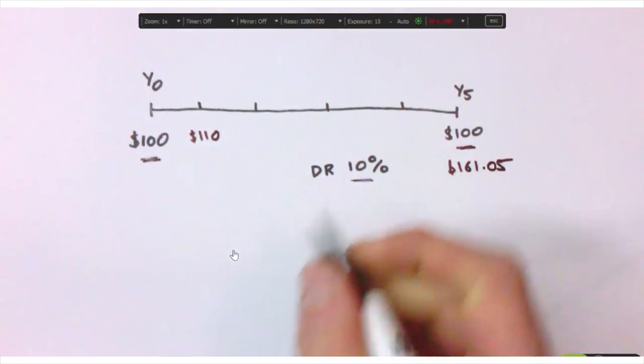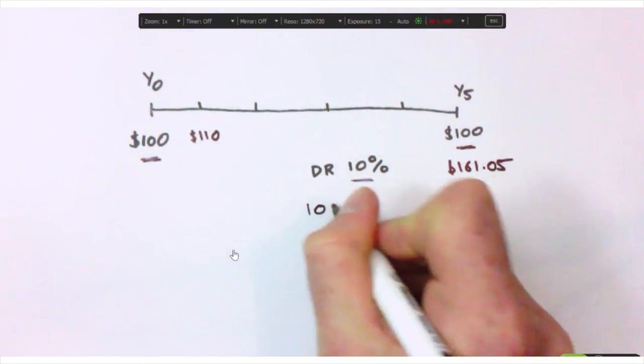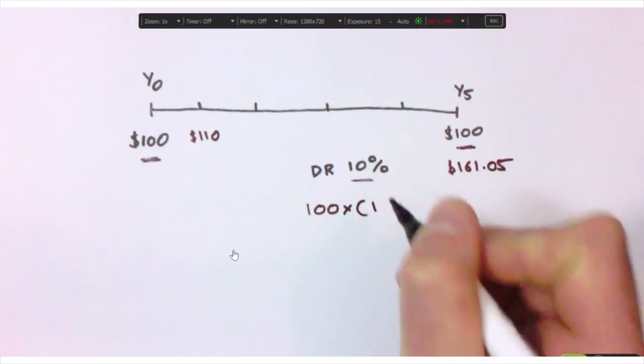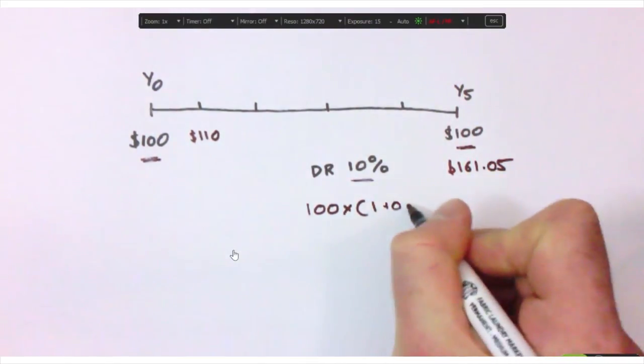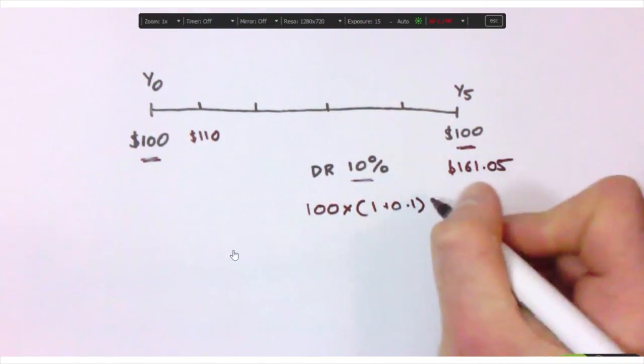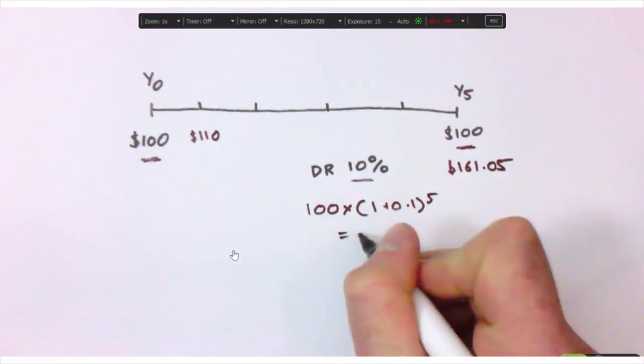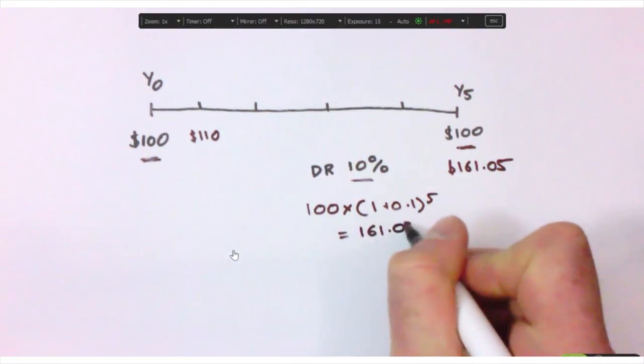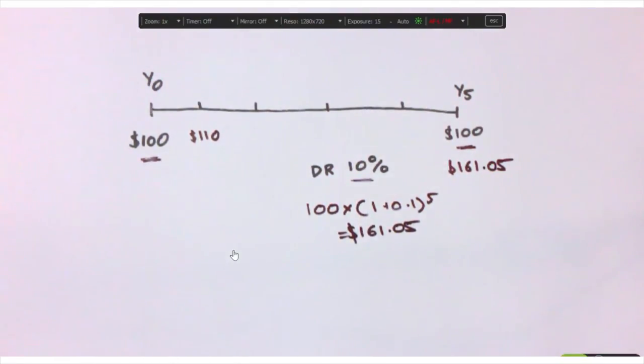To work this out, we multiply $100 by one plus our discount rate to the power of the year, in this case, five. And this equals $161.05. So the future value of $100 in five years' time is $161.05. I could earn an additional $61.05 on my investment.